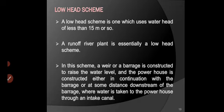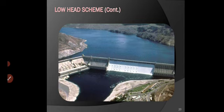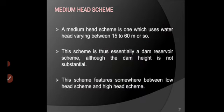In a low head scheme, a large dam is not required. By constructing a weir or barrage, a head of up to 15 meters can be achieved. A barrage is constructed to raise the water level, and the powerhouse is constructed either in continuation with the barrage or at some distance downstream, where water is taken through an intake canal. The low barrage is provided with gates and the powerhouse is constructed nearby. Medium head scheme uses a head between 50 to 60 meters; a dam is required, though the dam height is not substantial. This scheme features characteristics somewhere between low head and high head schemes.